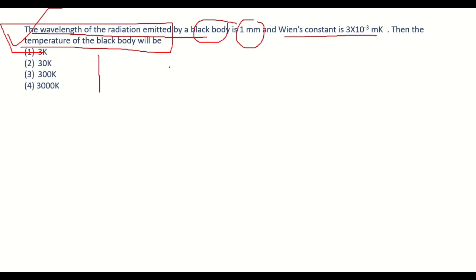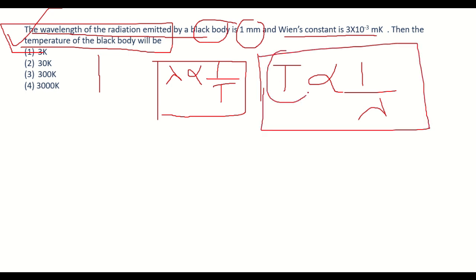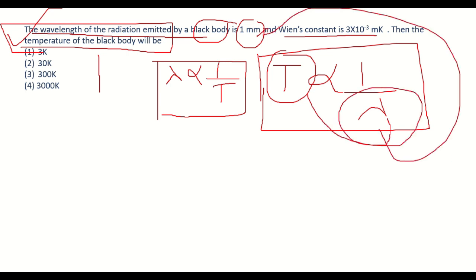Wien's displacement law states that the wavelength of a black body is inversely proportional to its temperature, or equivalently, the temperature of a black body is inversely proportional to its wavelength. To remove the proportionality, we introduce Wien's constant b, giving the equation: T = b / λ.